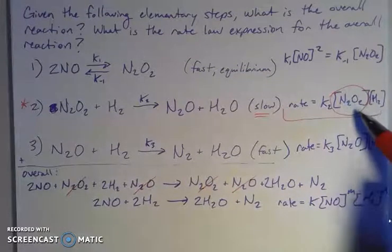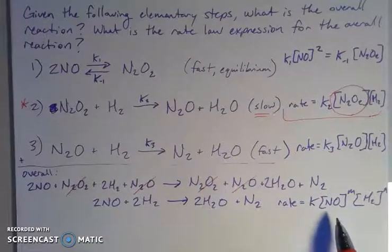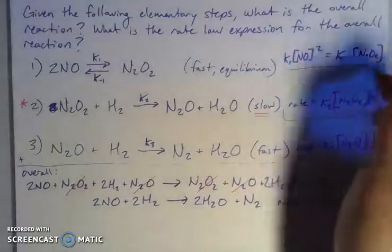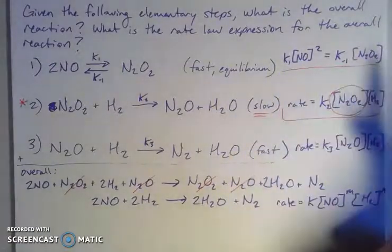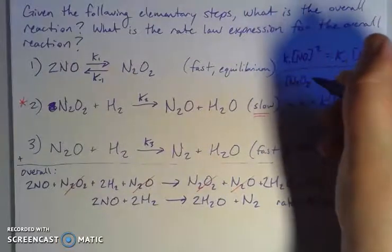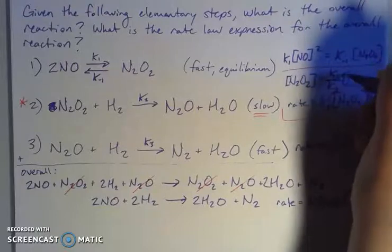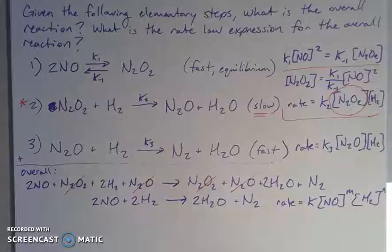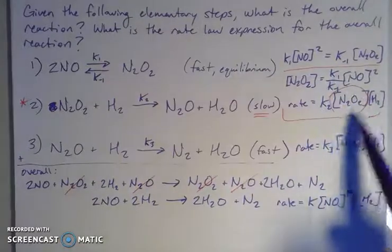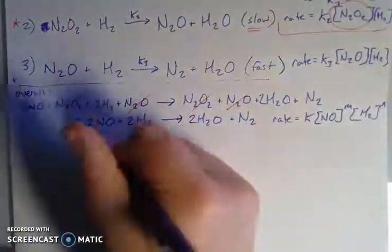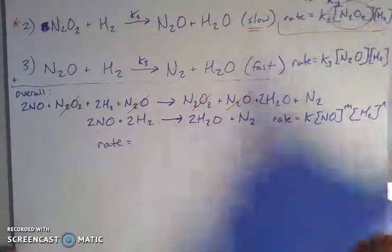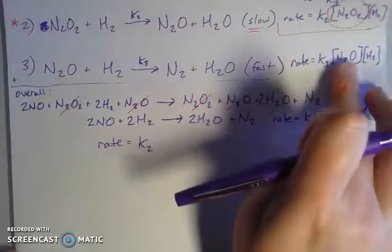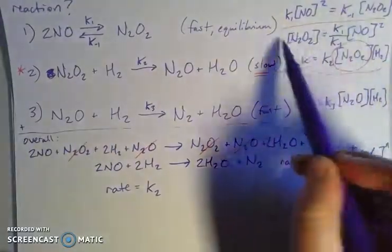So I need to figure out a way to substitute out this piece that isn't in my final rate expression and put something in that is. I need to find a relationship between N₂O₂ and NO. Handily, the equilibrium step gives me a way to solve for one from the other. I need to solve for the concentration of N₂O₂: [N₂O₂] is going to be equal to k₁ over k₋₁ times the concentration of [NO]².